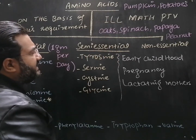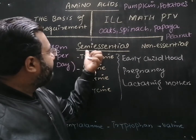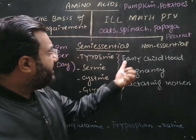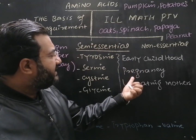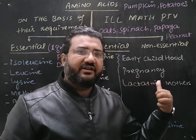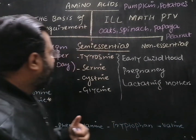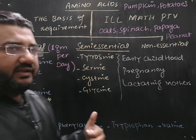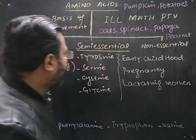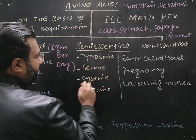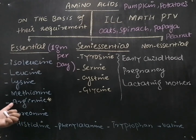Second are the semi-essential amino acids. In adult life, these semi-essential amino acids become non-essential. But during early childhood, during pregnancy, and for lactating mothers, these are the amino acids required in the diet to maintain their normal level in the body and live a healthy life. The semi-essential amino acids include tyrosine, serine, cysteine, glycine, and arginine.